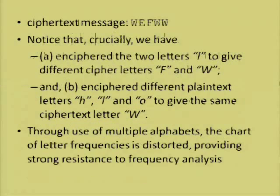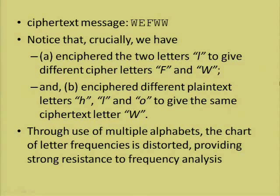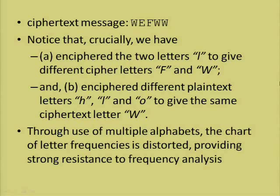Taking the message 'hello', our cipher algorithm encodes each letter using each cipher alphabet in turn, cycling through them. H is enciphered using the P alphabet, giving W. E is enciphered using the A alphabet, giving E. L is enciphered using the U alphabet, giving F. L is again enciphered, but this time with the L alphabet, giving W. And O is enciphered using the I alphabet, giving W. So our message is W-E-F-W-W. Crucially, we've enciphered the two L's to give different cipher letters F and W — so there's no repeated character visible in the middle. We've also enciphered different plain text letters H, L, and O to give the same cipher letter W. This means letters that appear frequently in cipher text may not be the same letter appearing frequently — it can be lots of different letters. That completely defeats frequency analysis. Through the use of multiple alphabets, the frequency chart is distorted or flattened, giving strong resistance to frequency analysis.